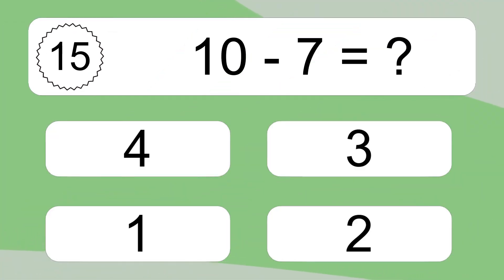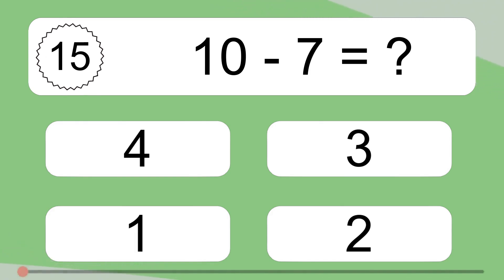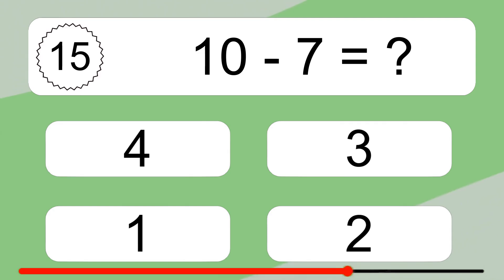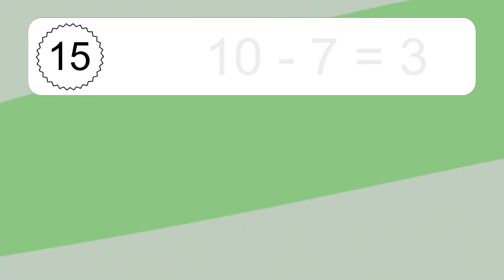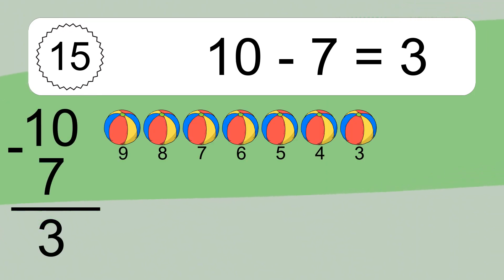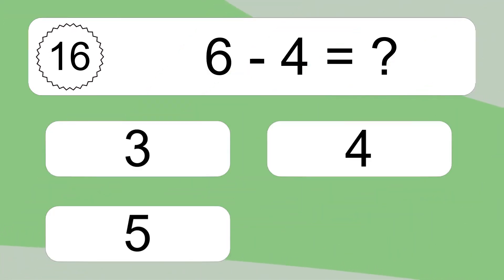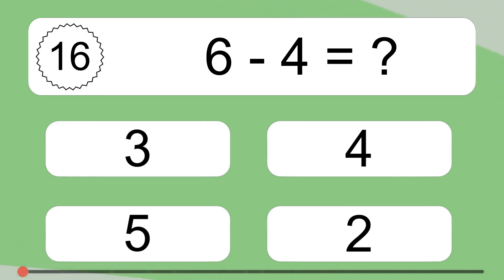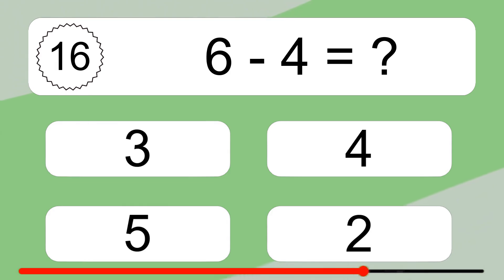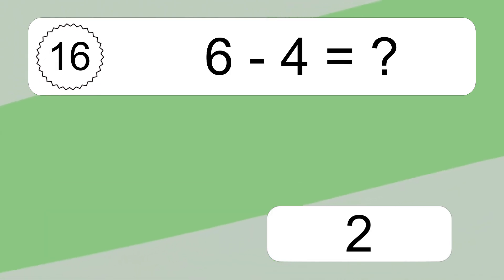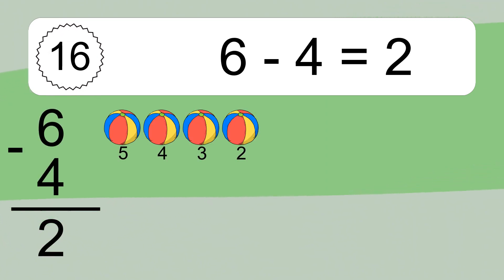10 minus 7 equals what? 10 minus 7 equals 3. Let's count it: 9, 8, 7, 6, 5, 4, 3. 6 minus 4 equals what? 6 minus 4 equals 2. Let's count it: 5, 4, 3, 2.